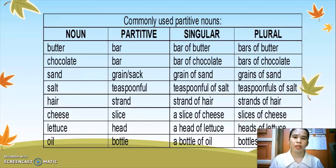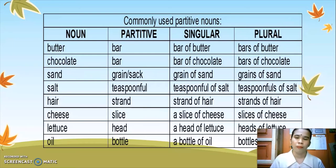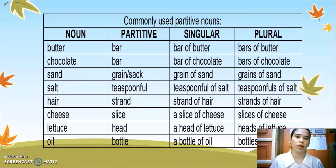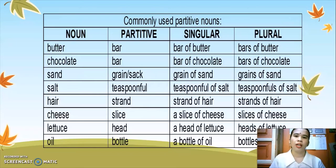That is the singular and plural form using partitive nouns. The last example is oil, and the partitive noun is bottle. To make it singular: 'a bottle of oil.' To make it plural: 'bottles of oil.' Always remember, class, that if you want to transform non-countable nouns into singular and plural form, you need to put a partitive noun before the noun.